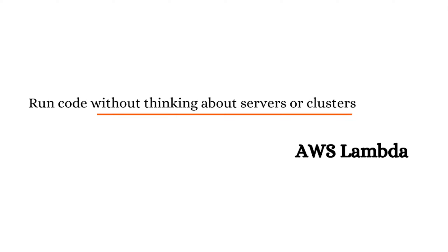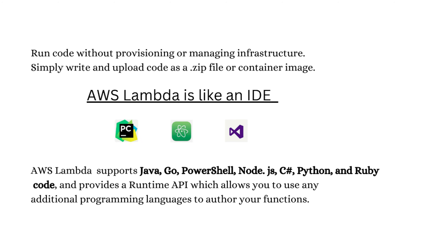Welcome back. In this video, we are going to understand what AWS Lambda service is. With AWS Lambda, we can run our code without provisioning or managing the infrastructure. We can simply write and upload code as a zip file or a container image. AWS Lambda is like an editor — similar to PyCharm, Atom, or Visual Studio — but it also provides extra features like support for multiple languages such as Python, Go, and Java. The base operating system is managed by AWS, which is why AWS Lambda is called a serverless service — because we are not managing the underlying hardware or operating system.